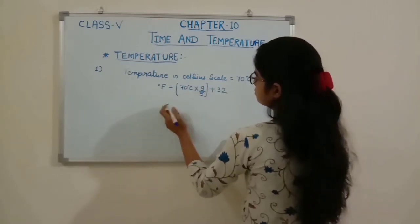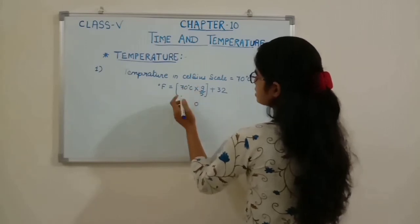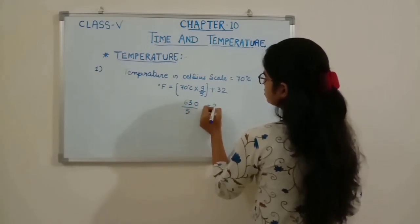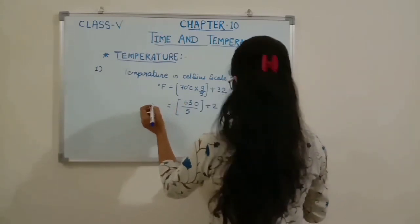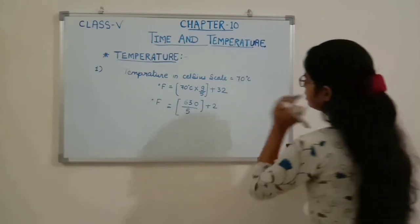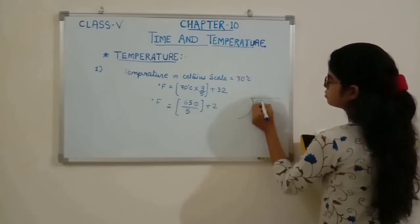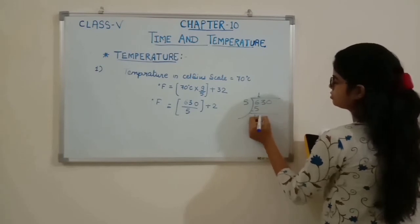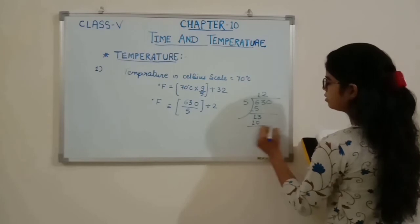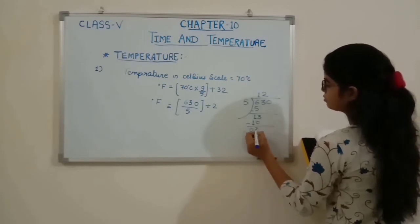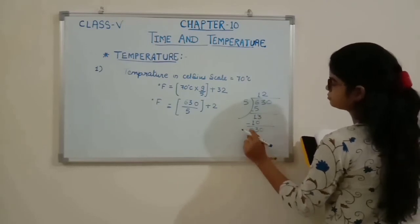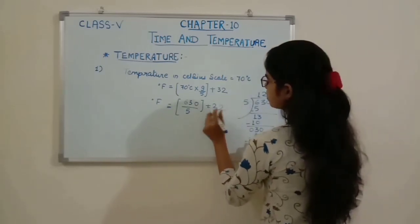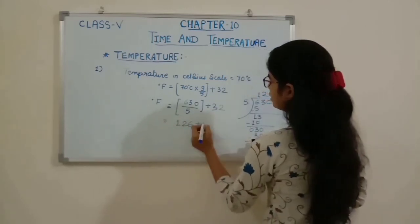Multiplying 70 × 9 gives 630. Dividing 630 by 5 gives 126. Then we add 32 to 126.